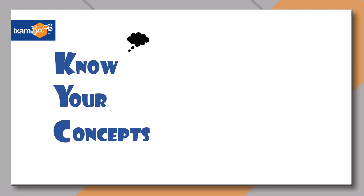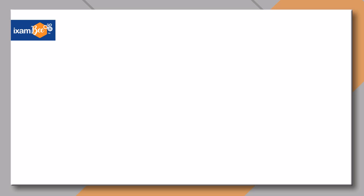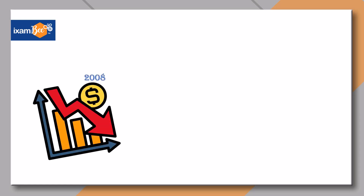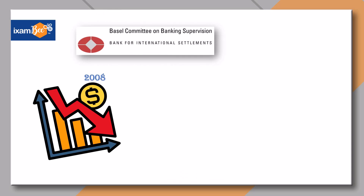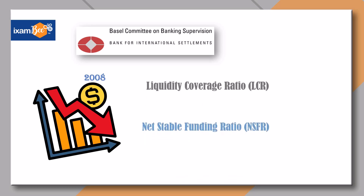In the backdrop of the global financial crisis that started in 2007, the Basel Committee on Banking Supervision or BCBS proposed certain reforms to strengthen global Capital and Liquidity Regulations, with the objective of promoting a more resilient banking sector. It came up with two minimum standards: Liquidity Coverage Ratio or LCR, and Net Stable Funding Ratio.